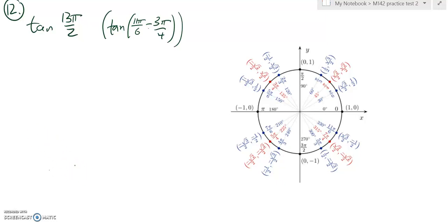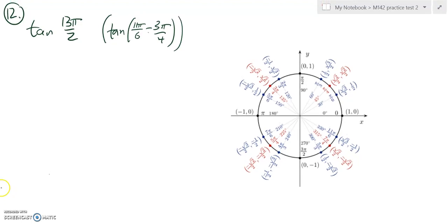This is math 142, practice test number 2, problem number 12, and we are going to get on this thing. So we are going to find the exact value of the tangent of 13π over 2. And we were even told how to break it up right here, so we'll break it up using that tangent subtraction relationship that we know.